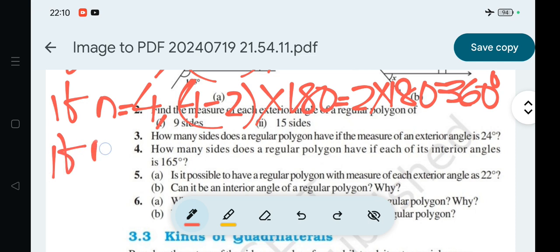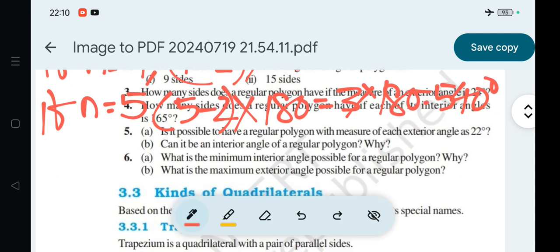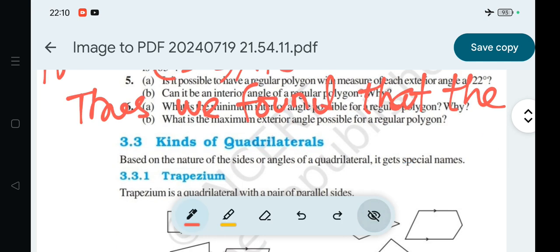If n equals 5, then (5-2) × 180 equals 3 × 180 equals 540 degrees. Thus, we found that the number of sides...